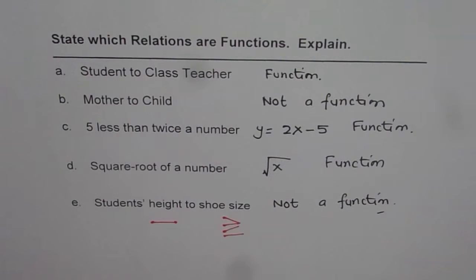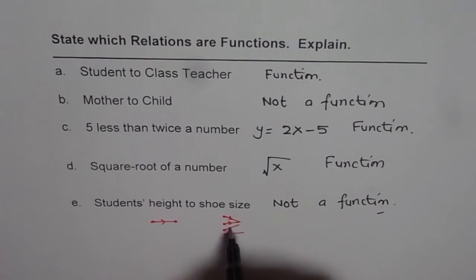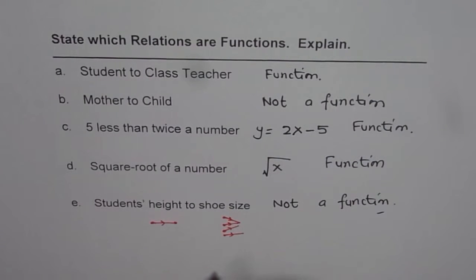So these are the two types of relations which will also be called as functions since every input, let me draw arrows here, since every input is associated with one unique output. So these are the functions.